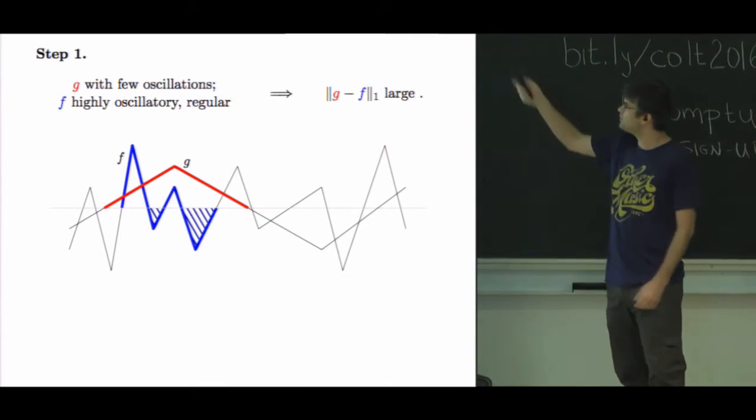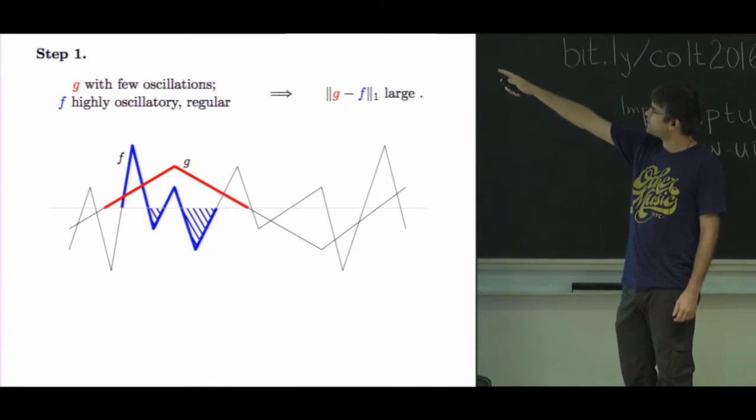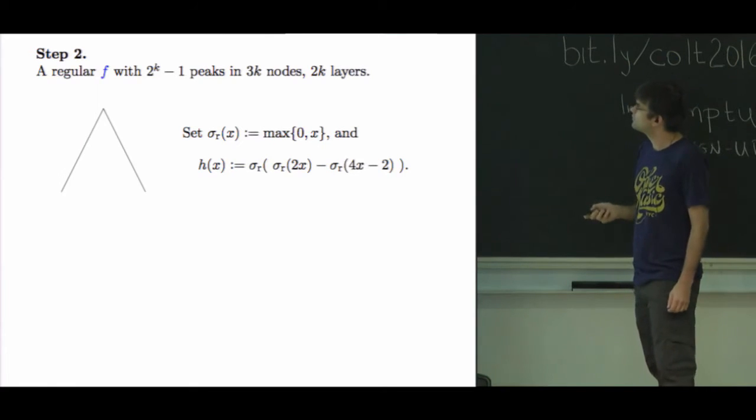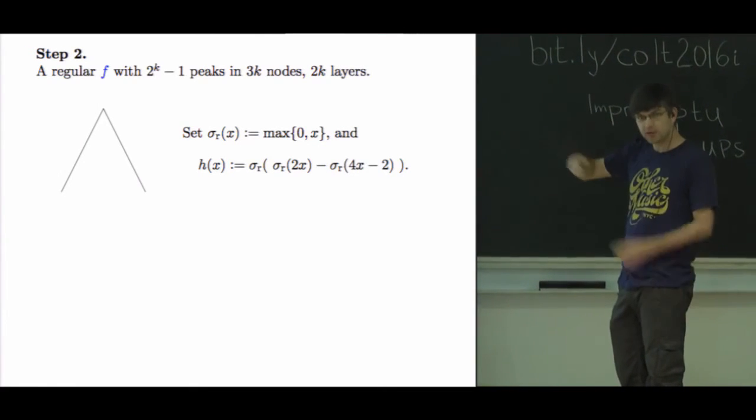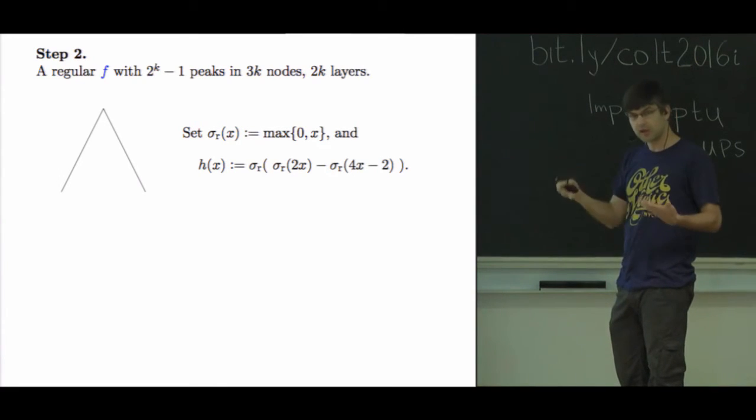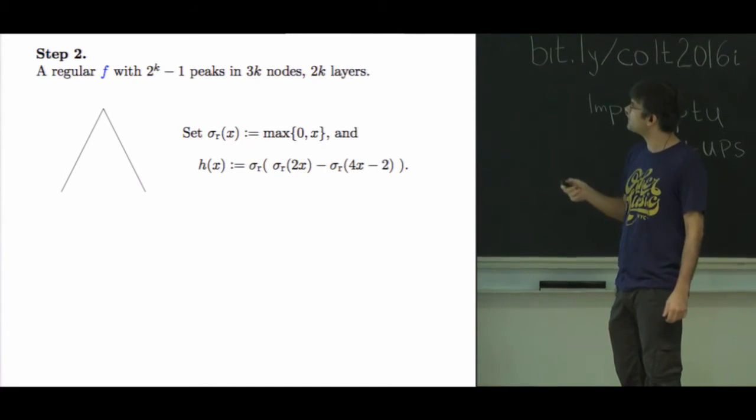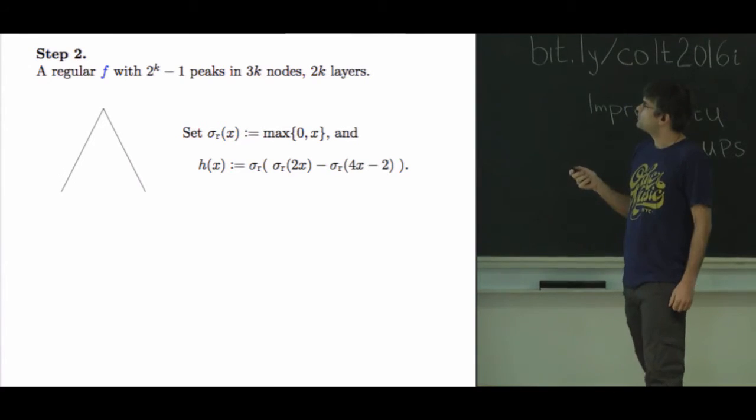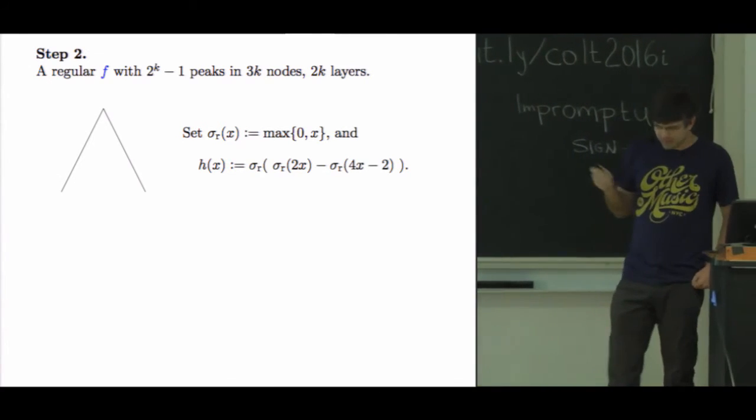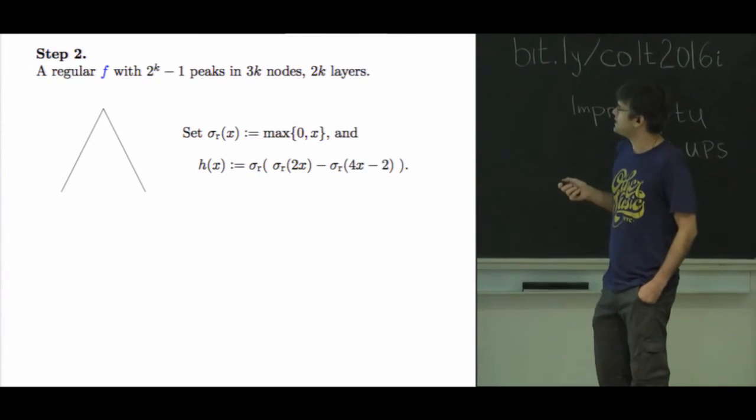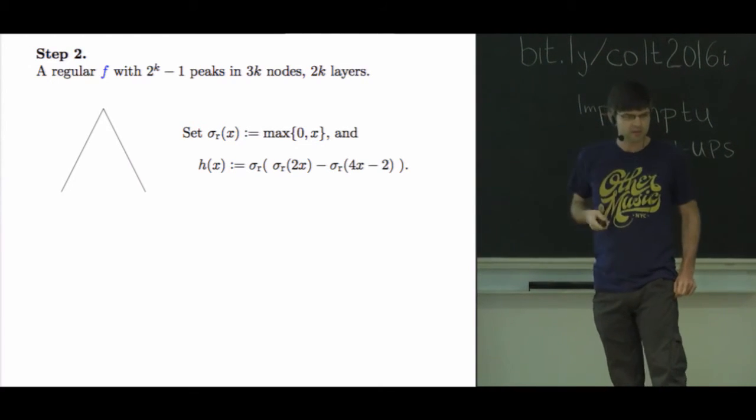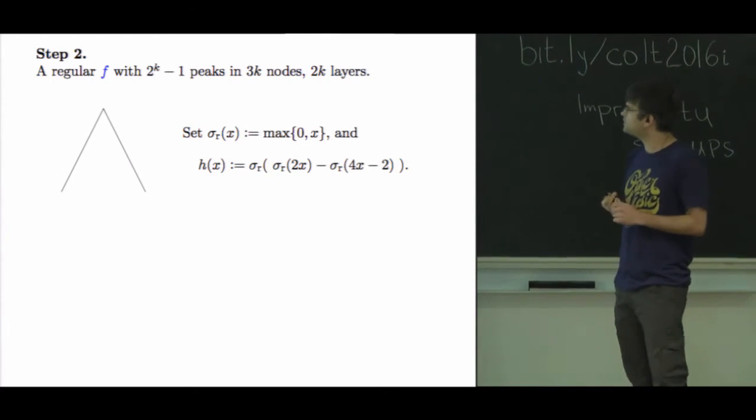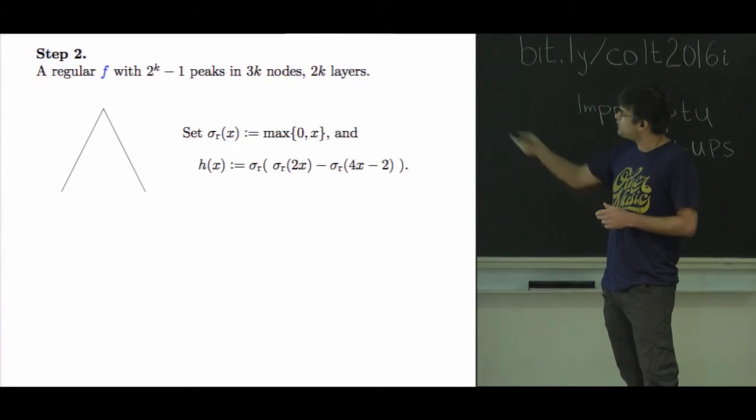So that's that implication. Now I have to show that I can construct g and f. Let me correct that - I have to construct f, I have to show that all the other g (the shallow g) are not very highly oscillatory. So the highly oscillatory f - very easy to construct.